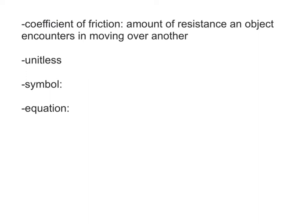Most coefficients of friction are less than one, and the lower or the closer to zero, the less friction there's going to be. The coefficient of friction is unitless because it's a ratio. The symbol for the coefficient of friction is the Greek letter mu. It's spelled mu. It's kind of a mix of an M and a U, but it's a lowercase Greek letter mu.